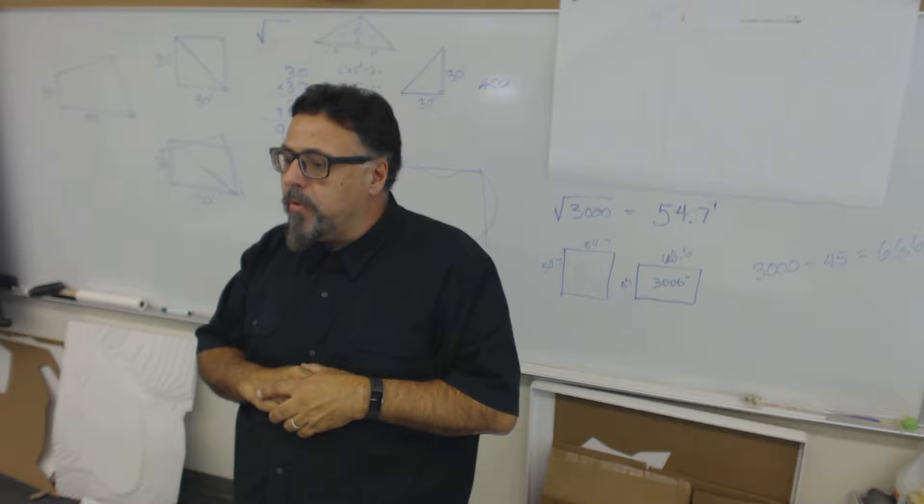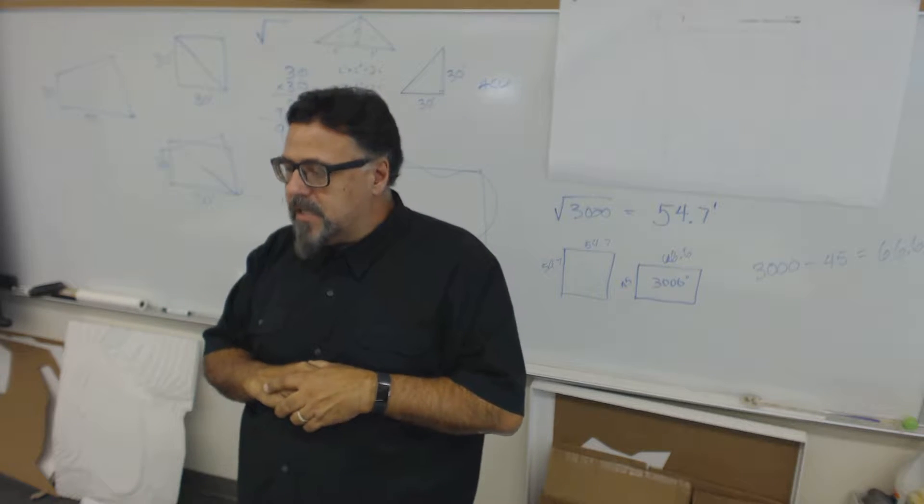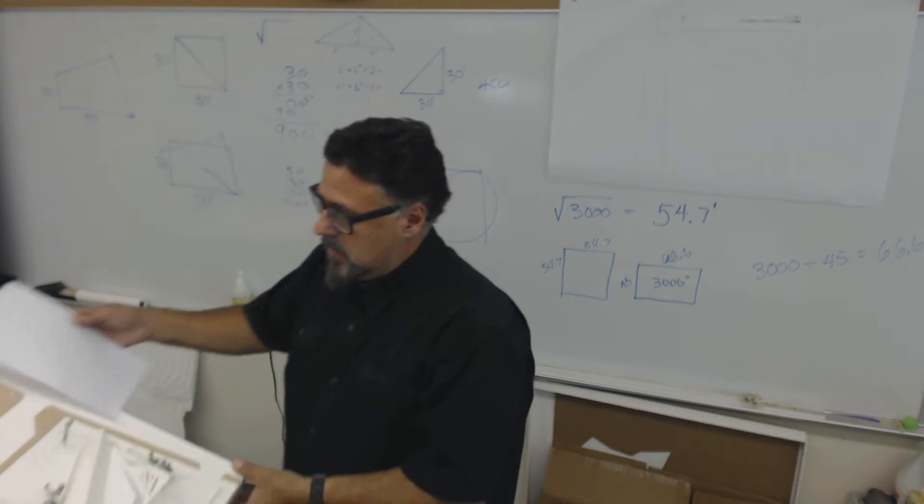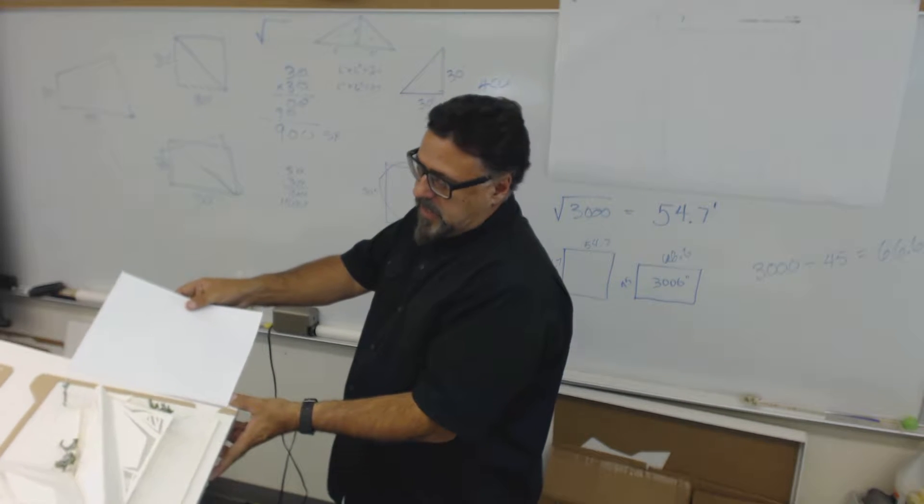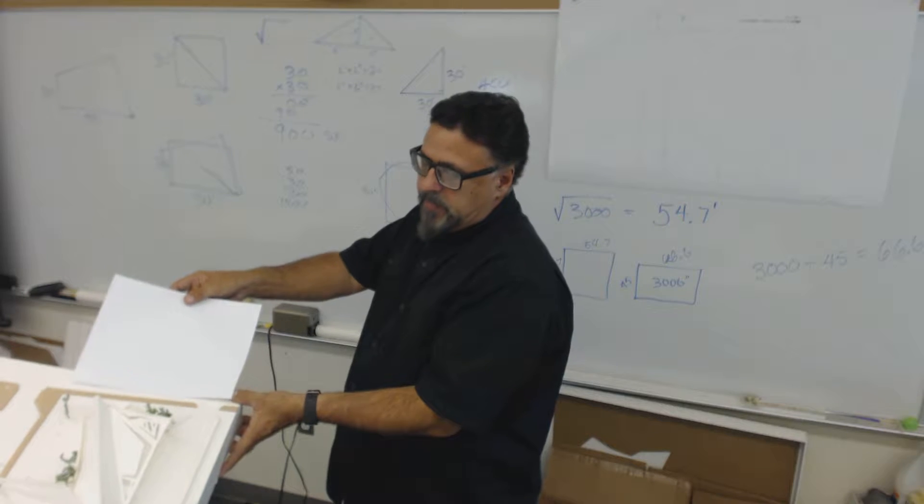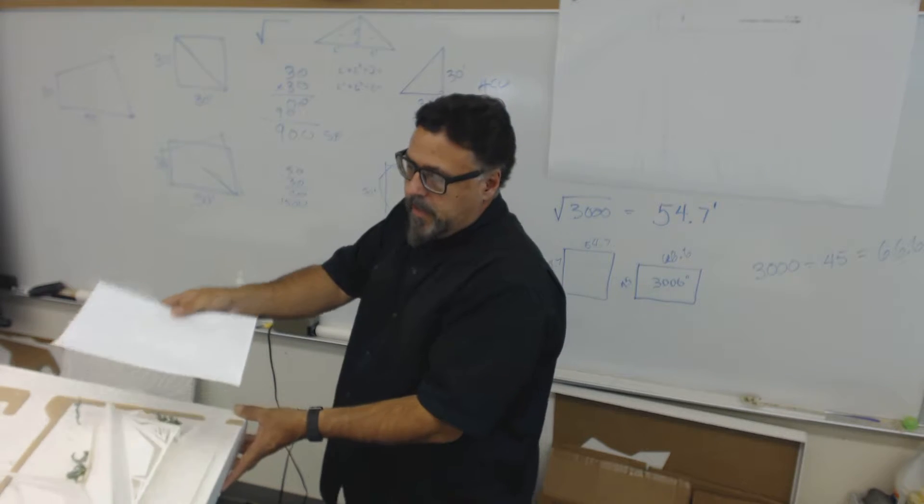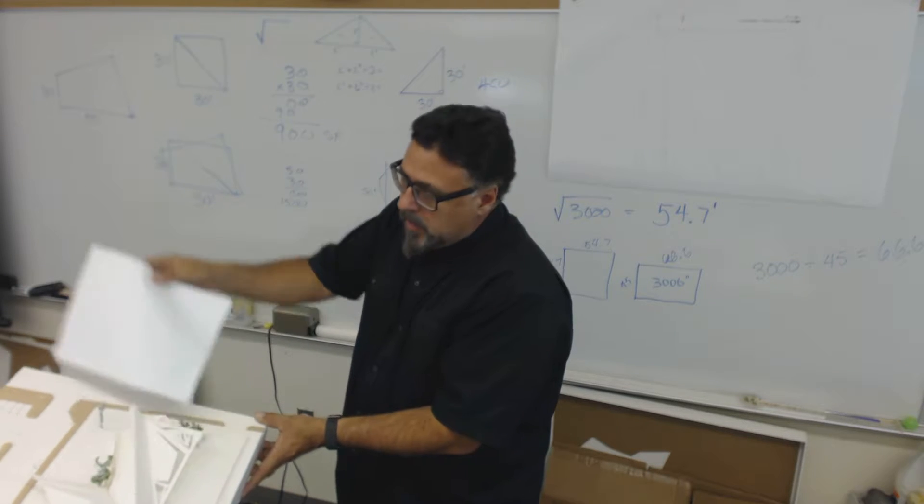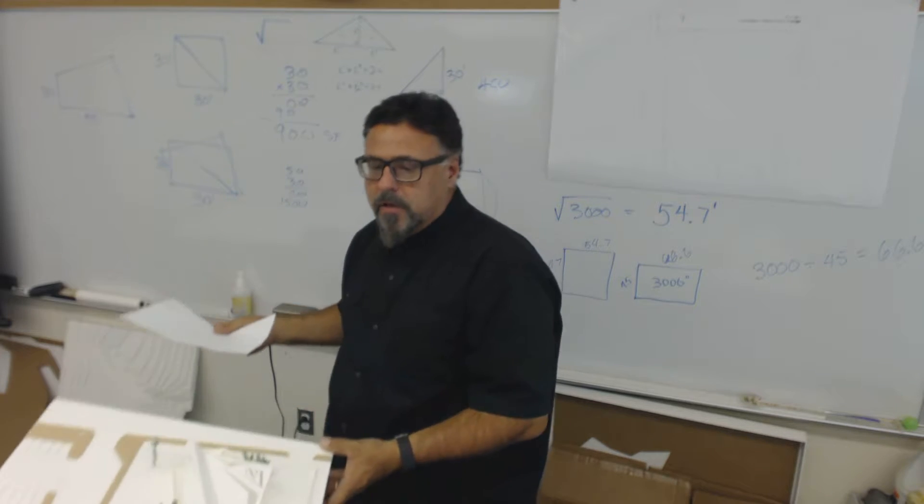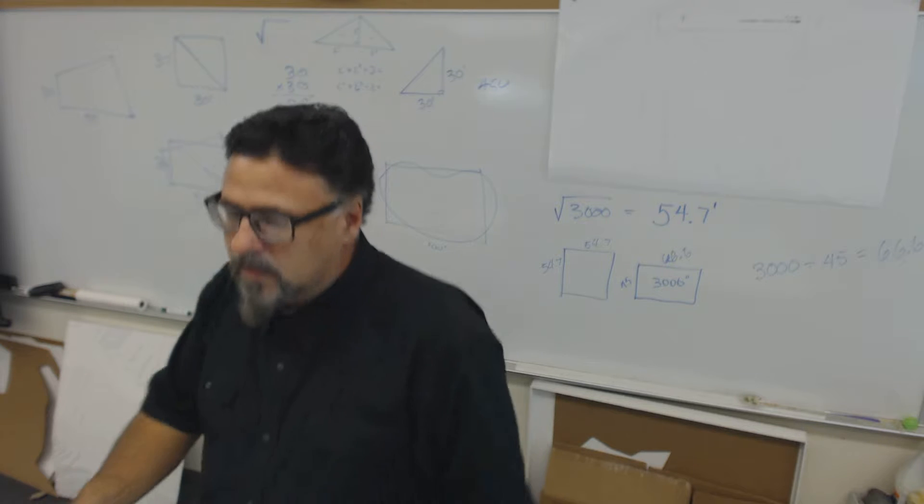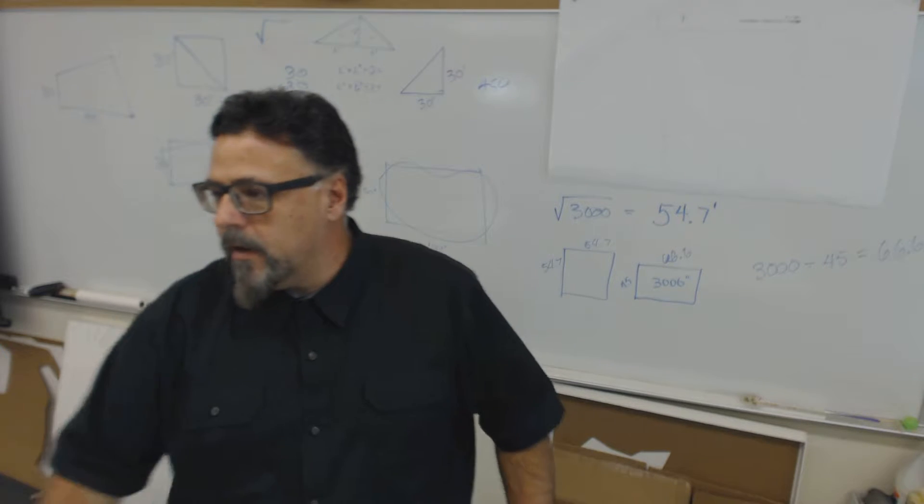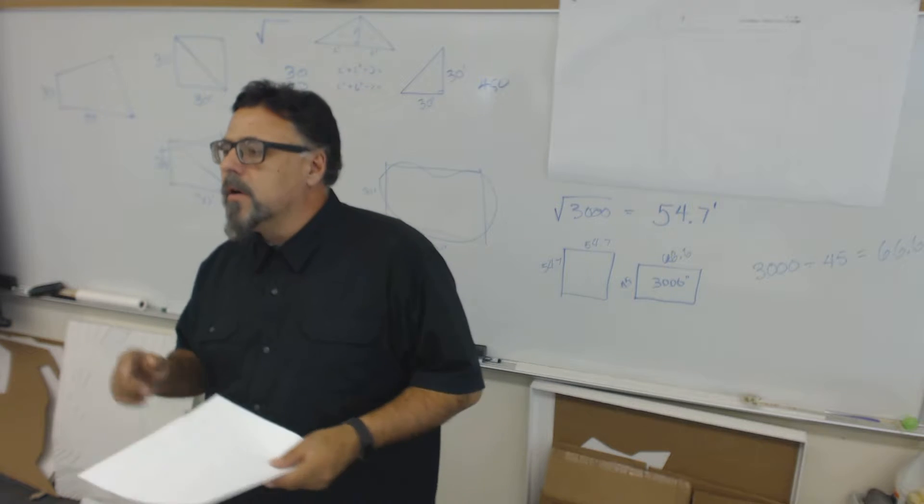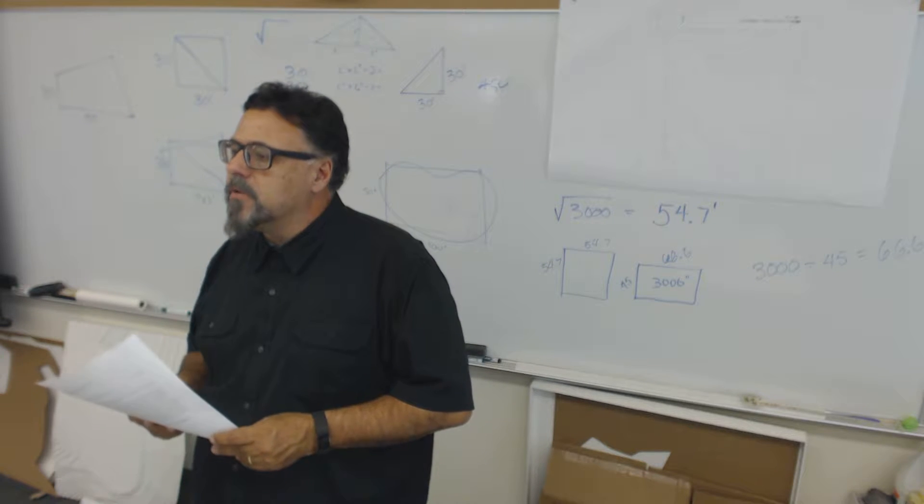You are going to print it to an 11 by 17. Just so you're aware, at 11 by 17, you should be able to get most of your site to fit. A little bit's going to fall off. So you're going to print your site, not including the parking area, just the area that's bounded by the sidewalks. You're going to print that at 1/16th of an inch to a foot.